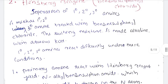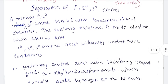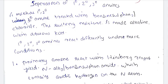Now, we are going to see how the Hinsberg reagent is used for the separation of primary, secondary, and tertiary amines. A mixture of primary, secondary, and tertiary amines will be treated with benzene sulfonyl chloride in an alkaline medium — specifically, alcoholic KOH, that is, alcoholic potassium hydroxide.